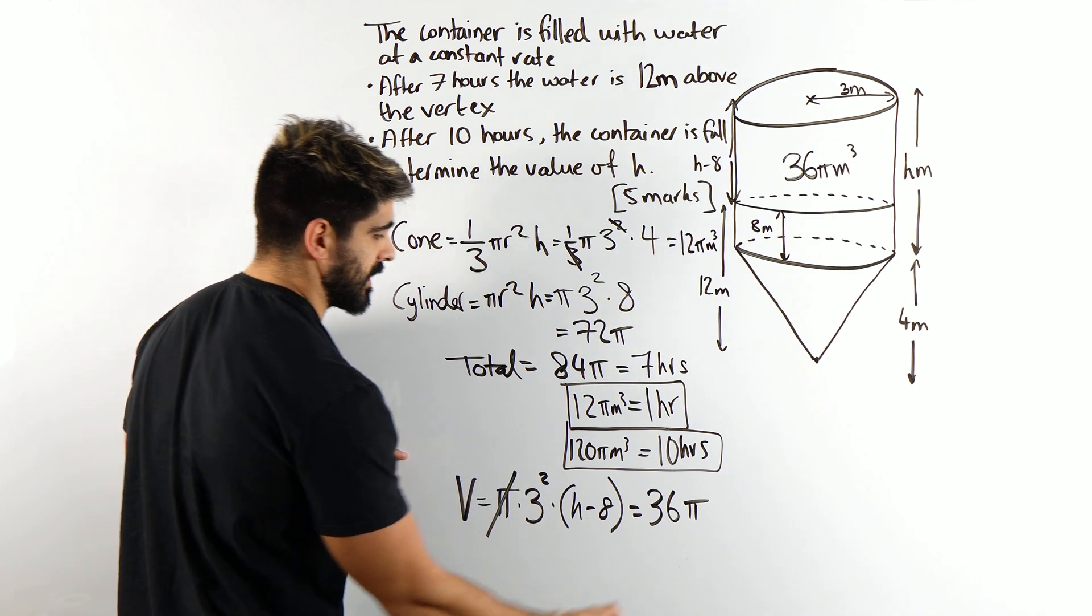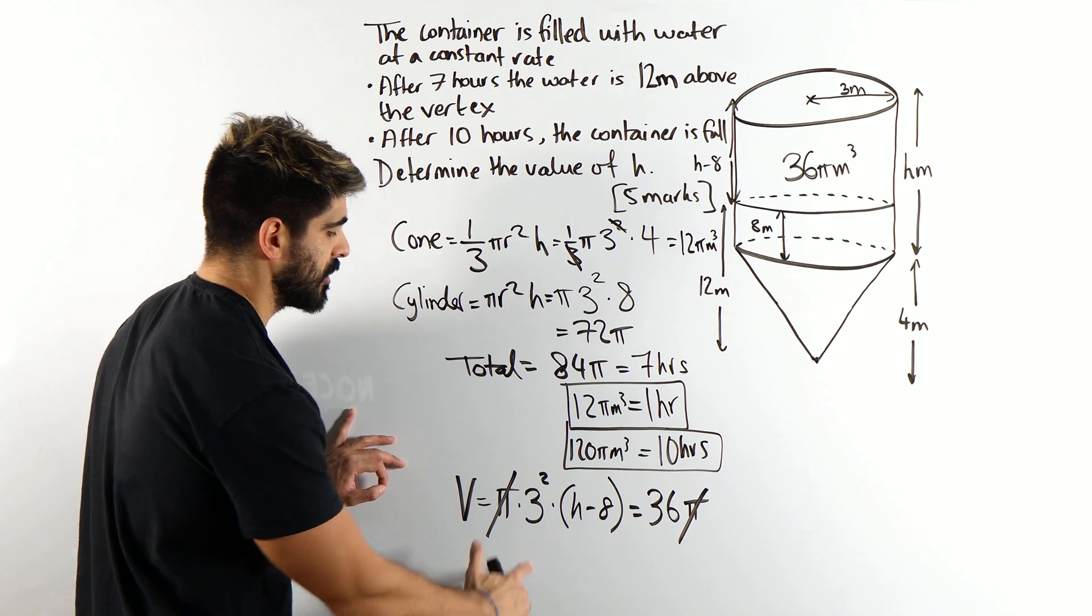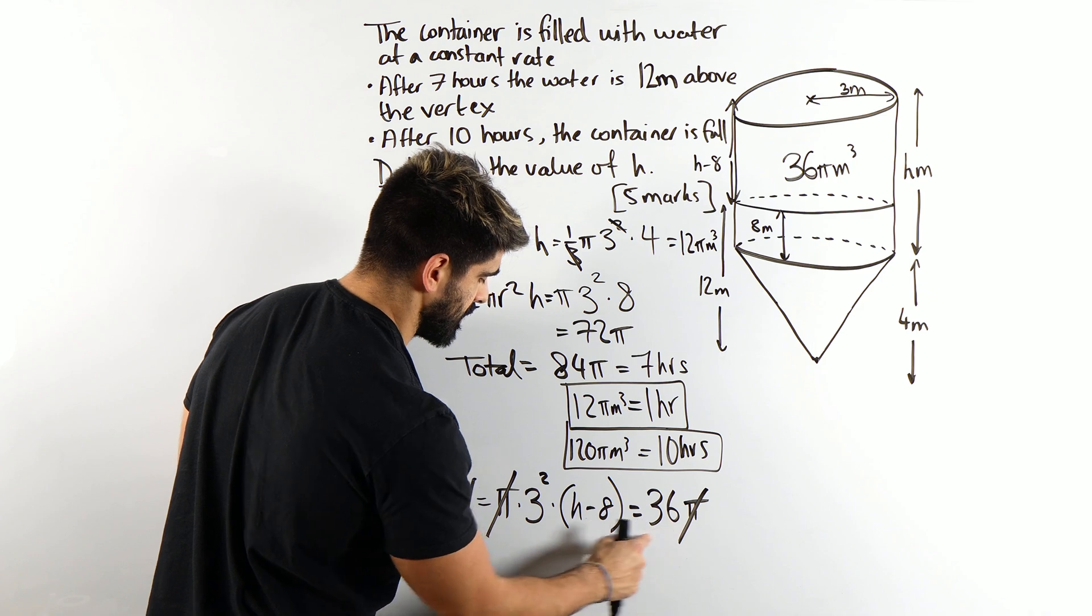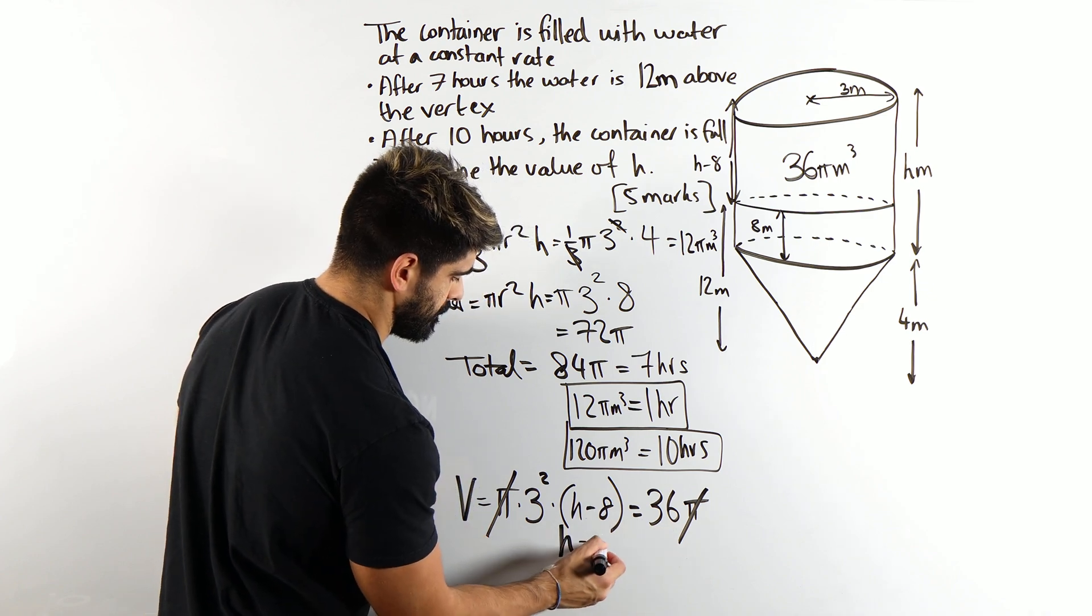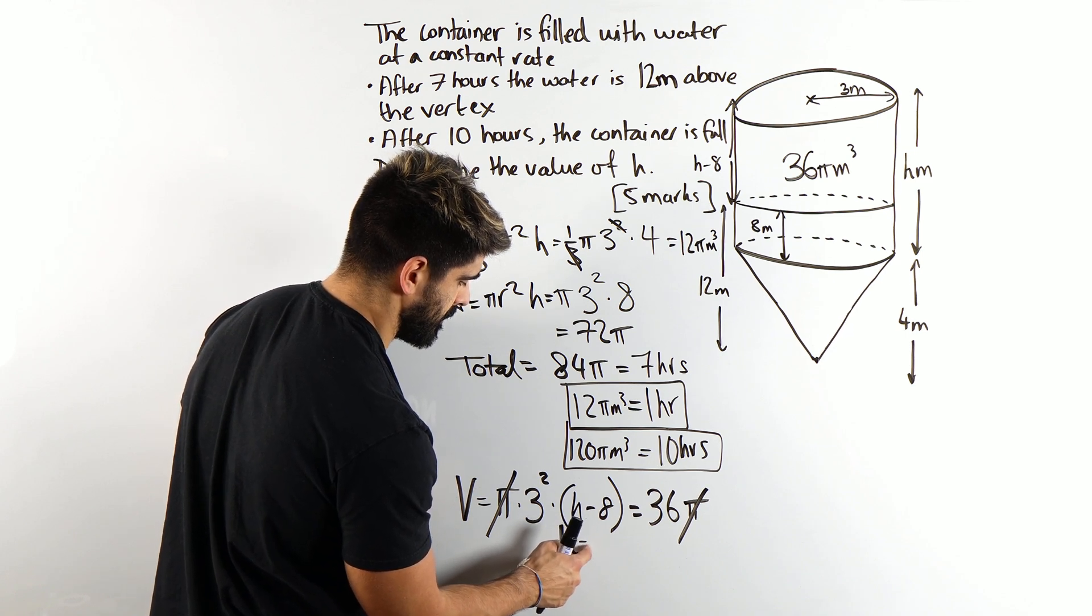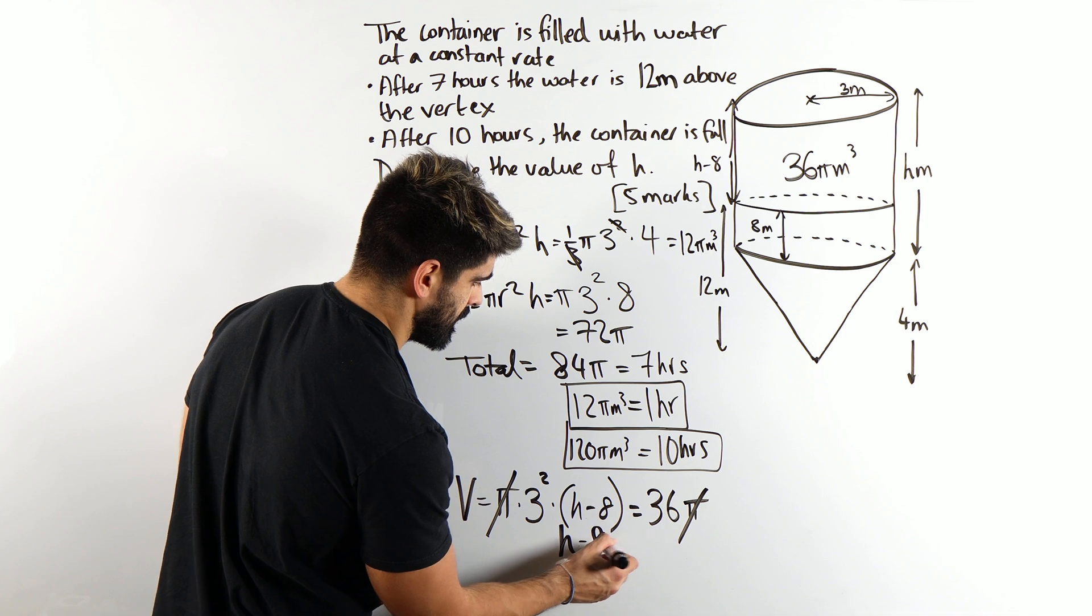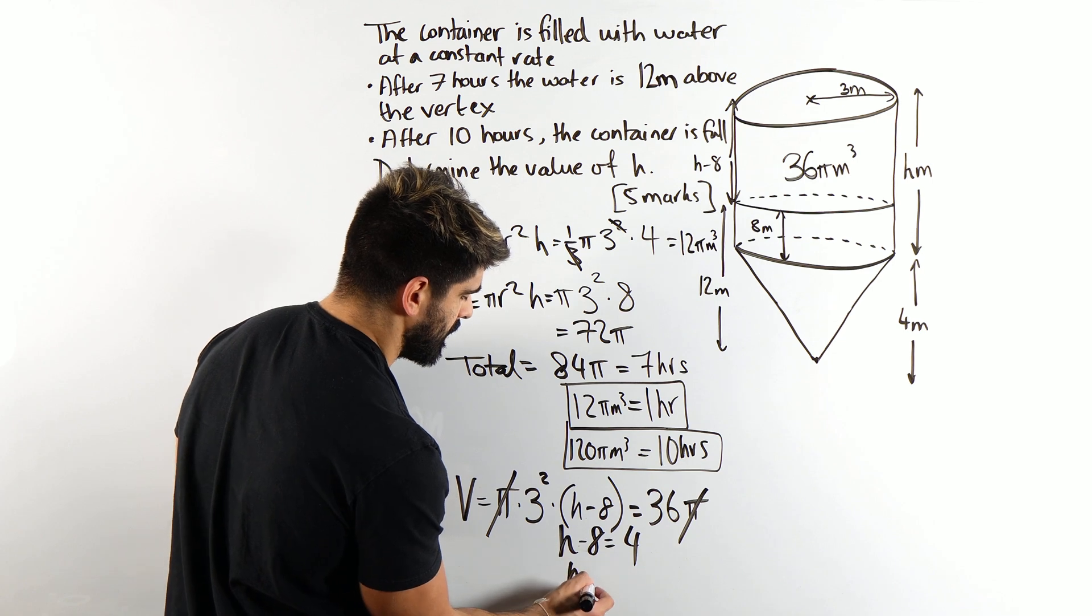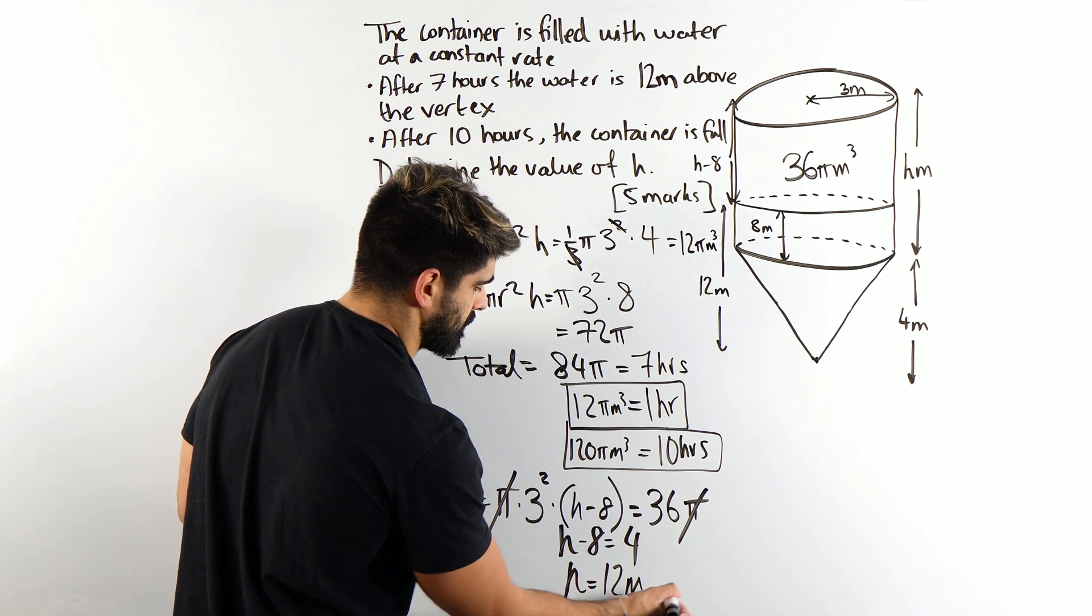We can cross off a pi on both sides by dividing by pi. 3 squared is 9. Remember that's a multiplication. So I'm going to divide by 9 on both sides. 36 divided by 9. h minus 8. 36 divided by 9 is 4. Add the 8 over. h is 12 meters.